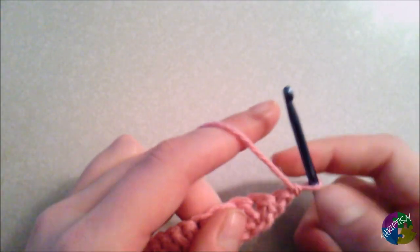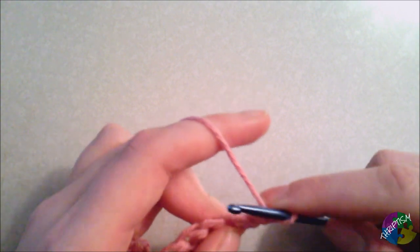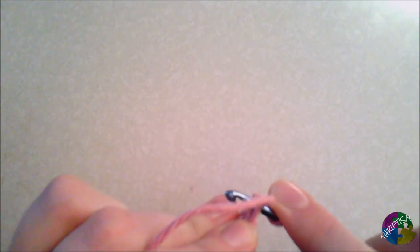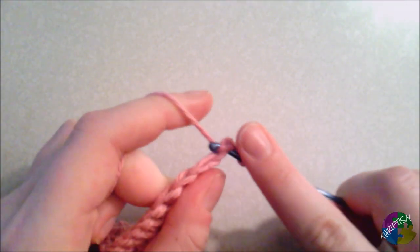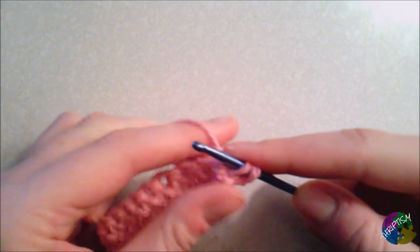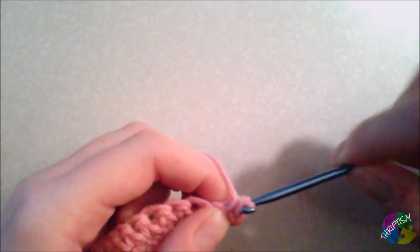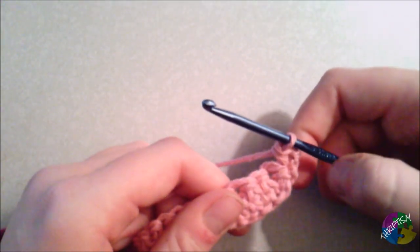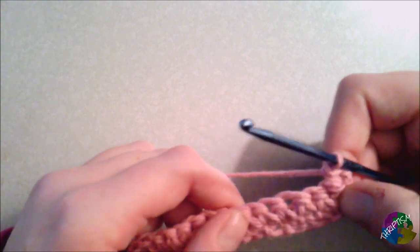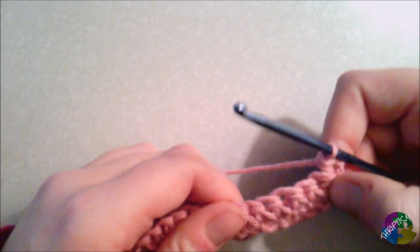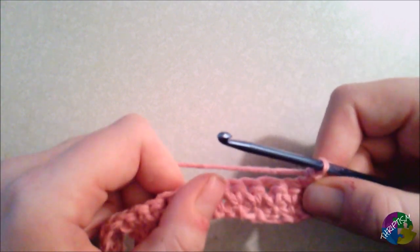So hold it something like this, and then as you go in, both loops again, pull through. So that's one single crochet, and we are on our third row now, so remember we'll want 27 more after we complete this.